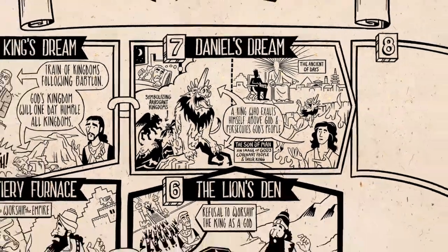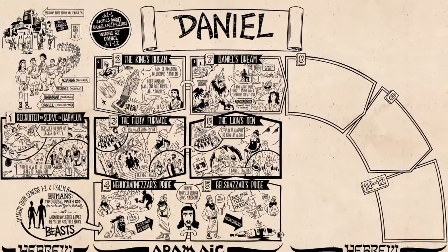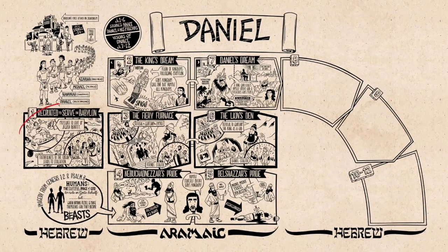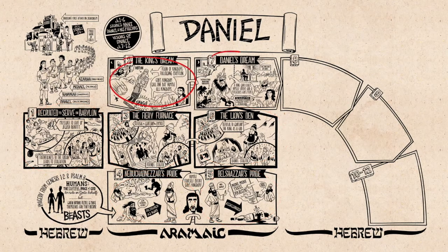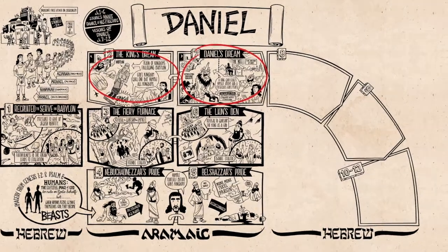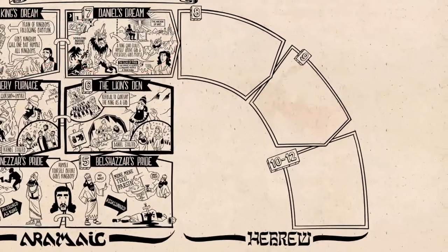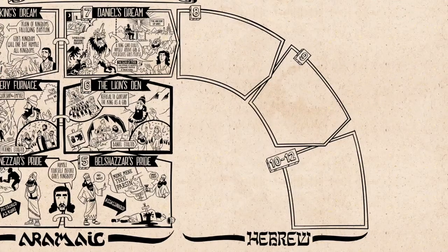We can look back now and see how all these stories in the first half fit together. The three stories of faithfulness despite persecution are meant to offer hope to God's suffering people among the nations. They suffer because human kingdoms have rebelled against God and become beasts. These visions encourage patience — that God's people are to wait for him to bring his kingdom and vindicate his suffering people. But it raises the question: when is God going to do that? And that's what the final three visions set out to explore.